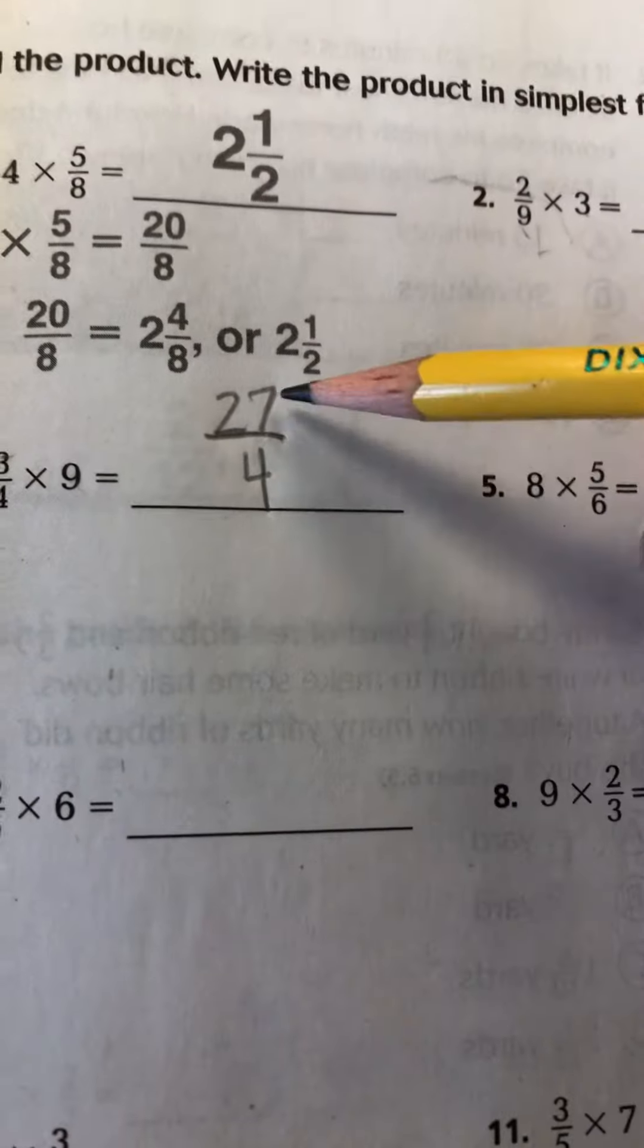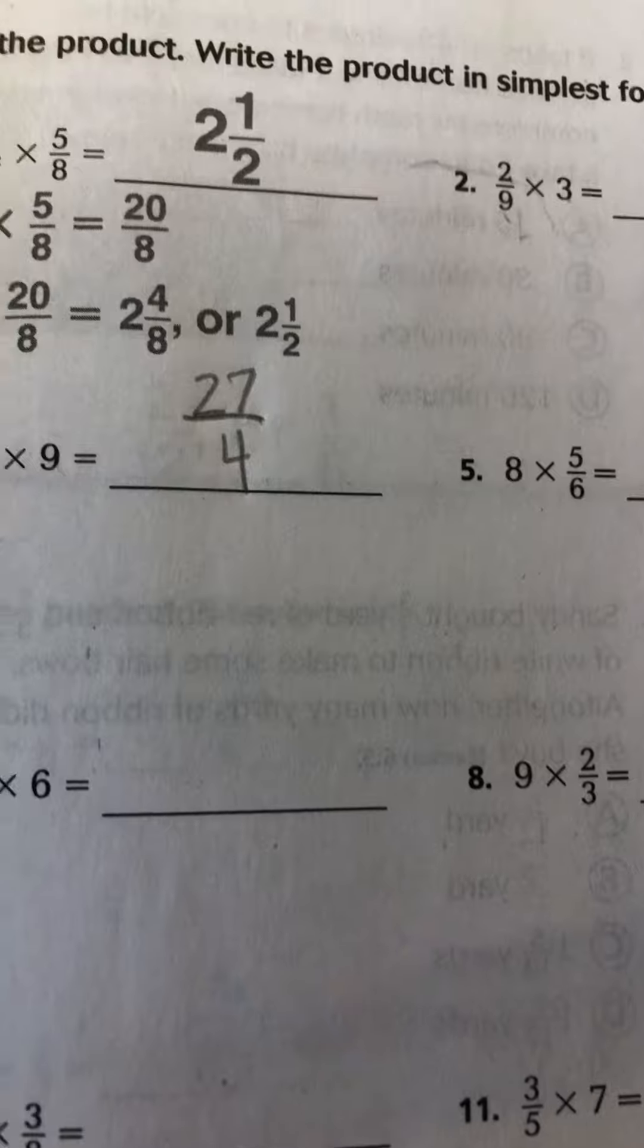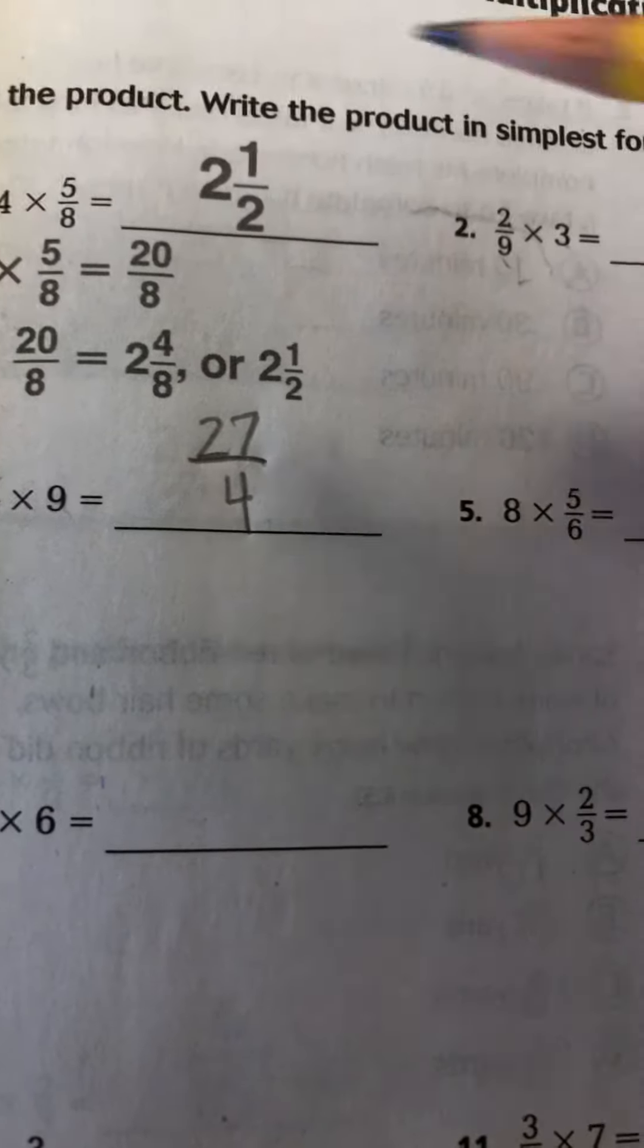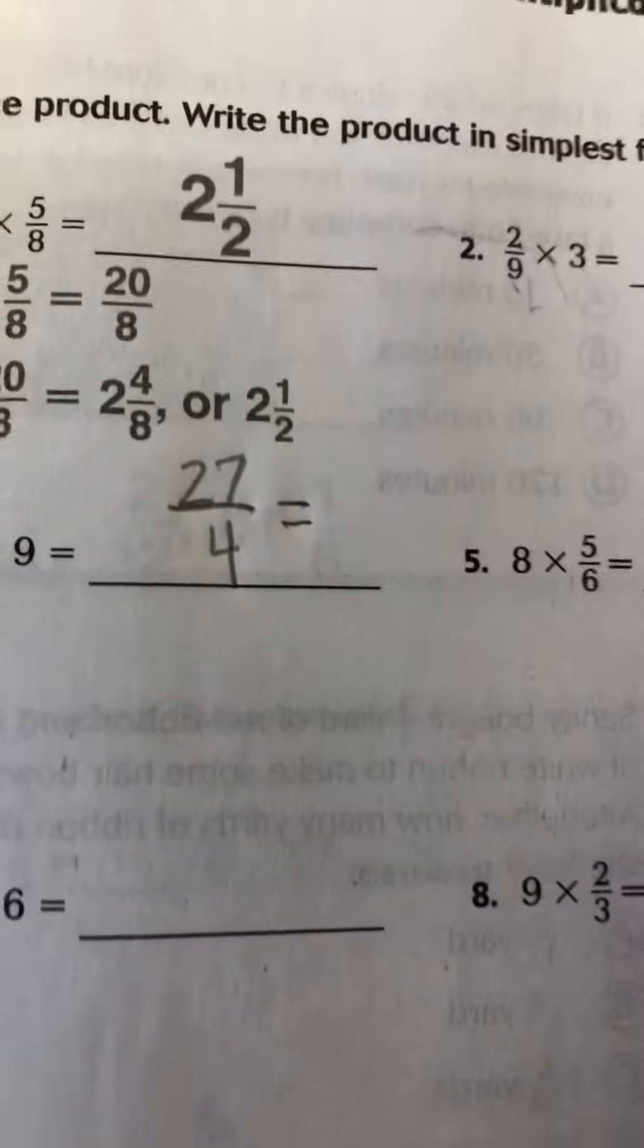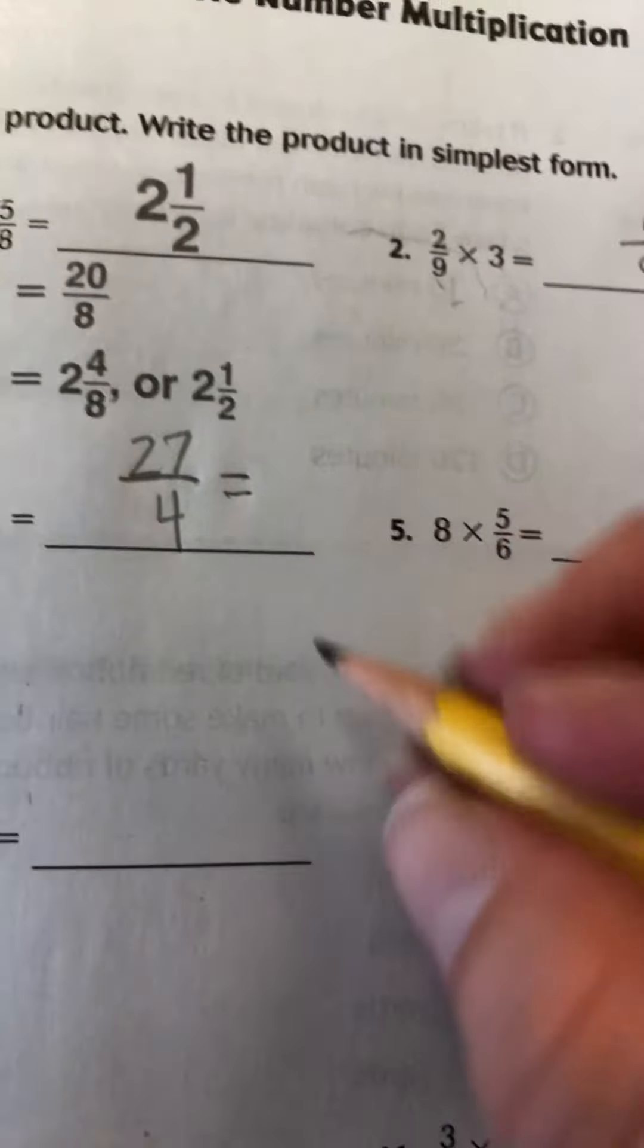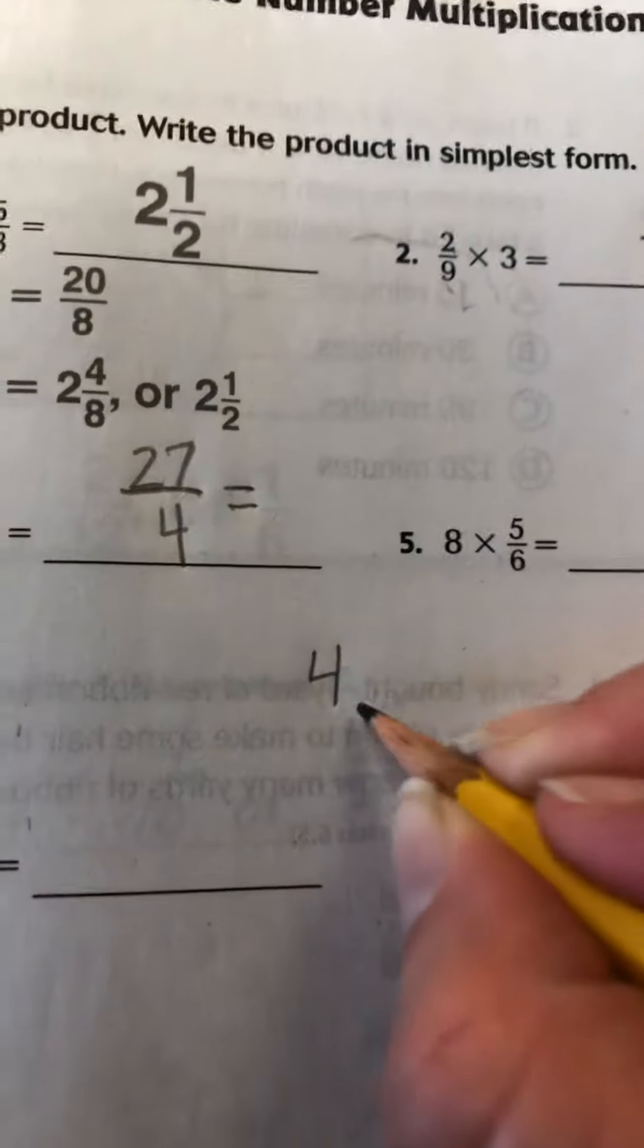Now again, 27 fourths is an improper fraction. So that means we do have to simplify it. So we are dividing the 4 into the 27. What I tell the kids they can do if it's difficult for them is to write it out as long division.